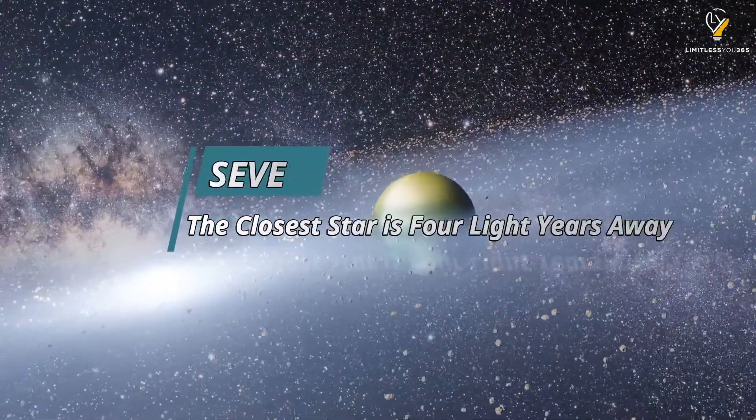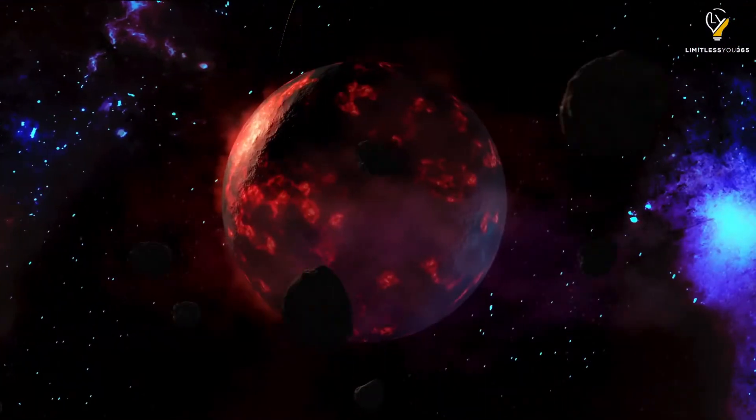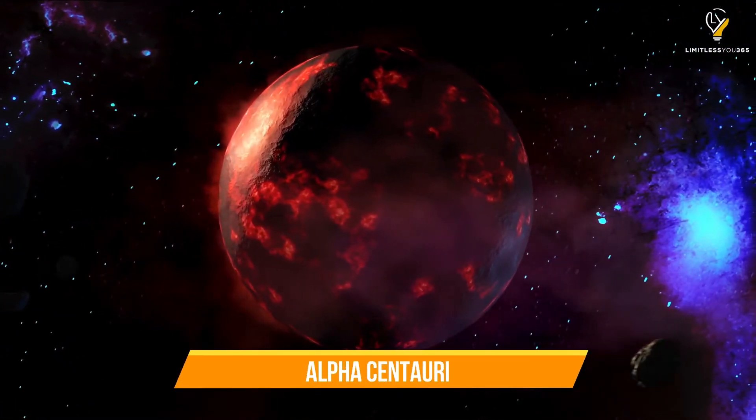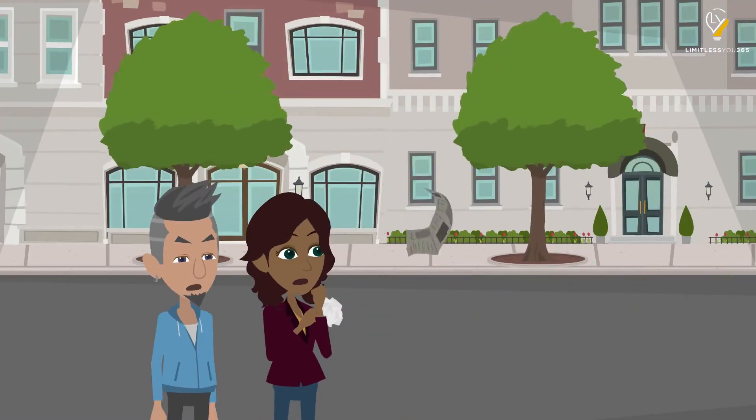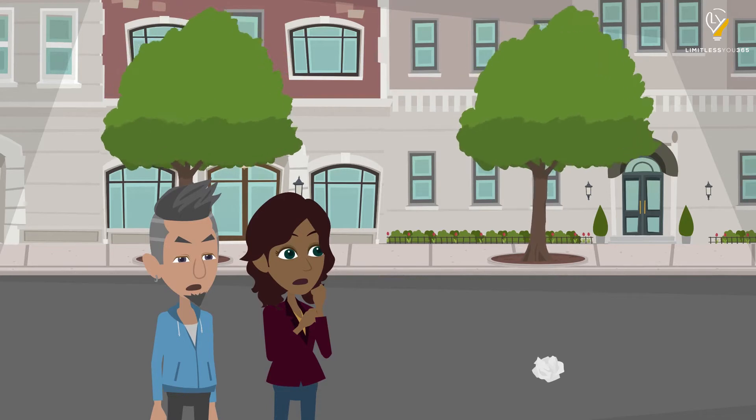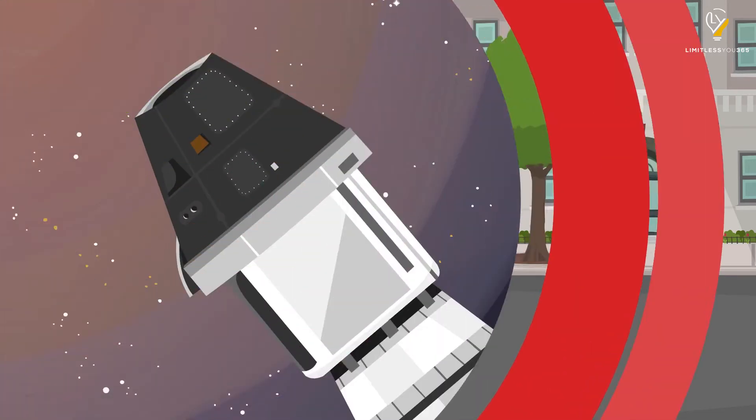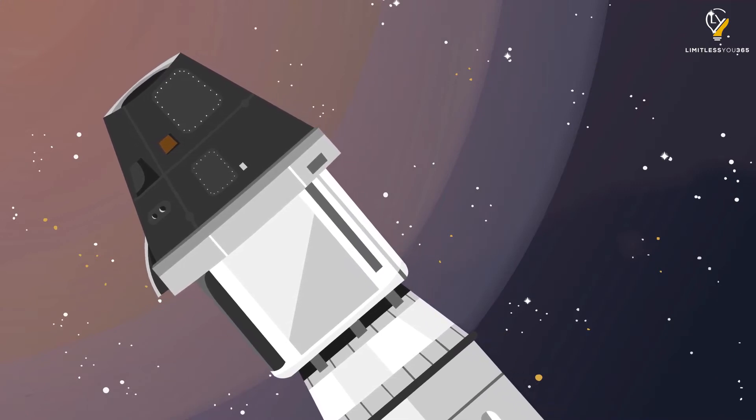Number seven: The closest star is four light years away. The closest star to us, besides our sun, is Alpha Centauri, and it's really freaking far away. It might not seem like such a big deal on an everyday basis, but just know that if you travel at the speed of light, the fastest speed there is, it would take you over four years to get there. Even traveling at regular speeds, it would still take thousands of years.